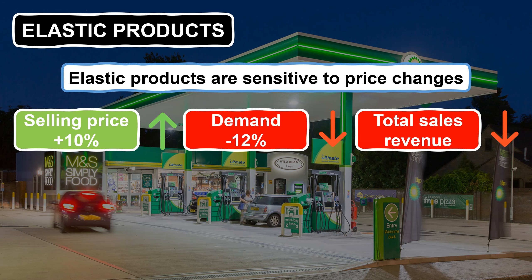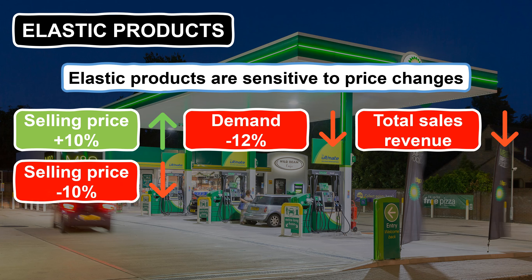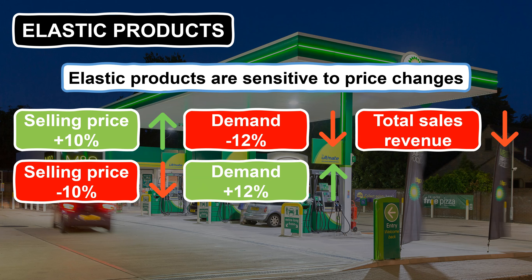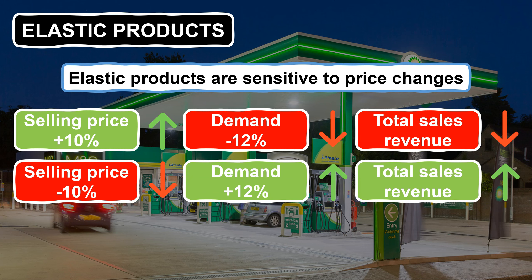However, this all changes when a business is looking at decreasing the price of an elastic product. If the price of an elastic product was decreased by 10%, demand would actually increase by more than 10% — again we'll use 12% for this scenario. This means that total revenue would increase overall, even though the revenue per sale would be reduced, because the percentage demand has increased more than the percentage price change. So to summarise, if a product is price elastic, total sales revenue will go down if the selling price is increased, but if the selling price is reduced, total sales revenue will go up — changes to the selling price have the opposite impact on total sales revenue.